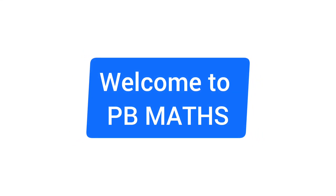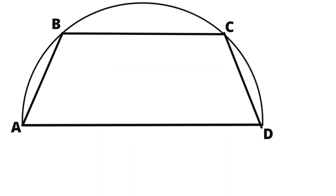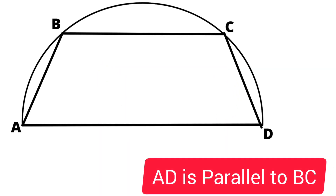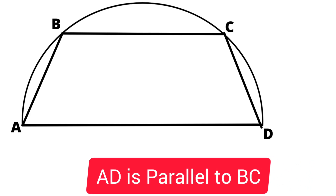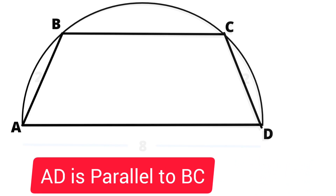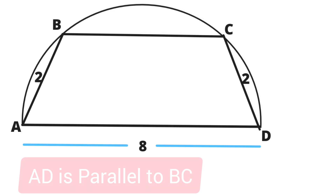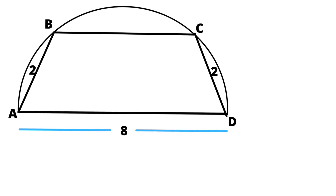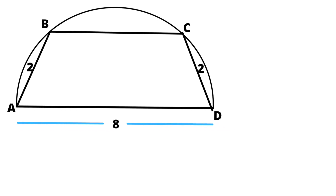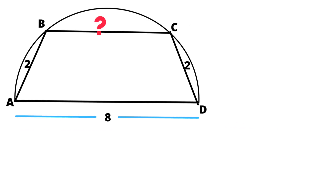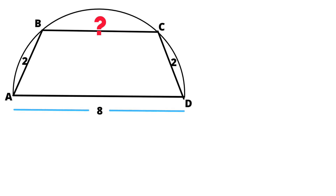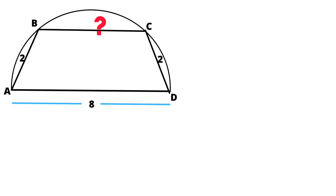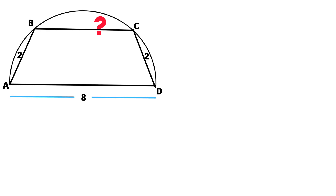Hello everyone, welcome to PB Maths. On a semicircle with diameter AD, chord BC is parallel to the diameter. Further, each of the chords AB and CD has length 2 cm while AD has length 8 cm. Then, what is the length of BC? This question is taken from CAT examination.